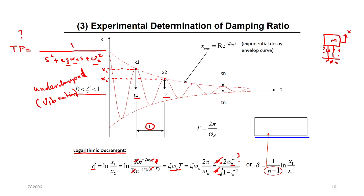Once you know zeta, you can easily find omega_n. Omega_n equals omega_d over √(1 − ζ²). Do you know omega_d? Yes, from the period: 2π over the period. So you know omega_d, you know zeta — now you know omega_n. Once you know omega_n and zeta, you know your transfer function.